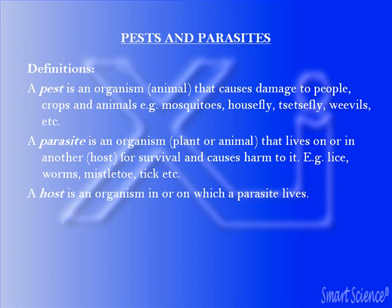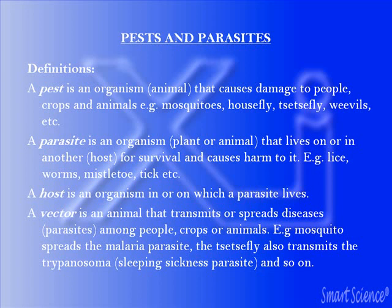A vector is an animal that transmits or spreads diseases — that is, the parasite that causes diseases — among people, crops, or animals. Examples of such vectors are the mosquito, which spreads the malaria parasite, and the tsetse fly, which also transmits the trypanosome, the parasite that causes sleeping sickness.